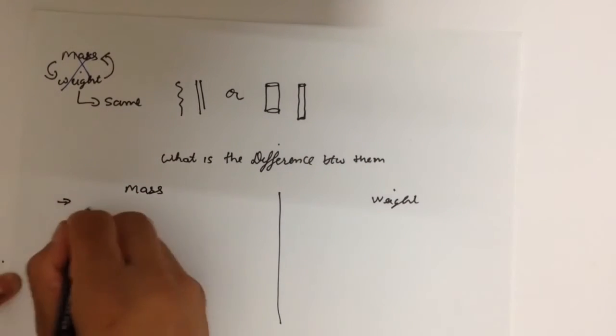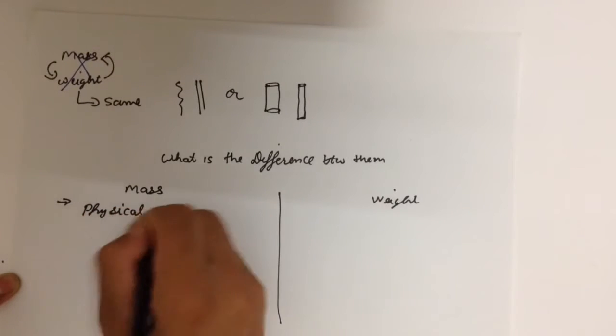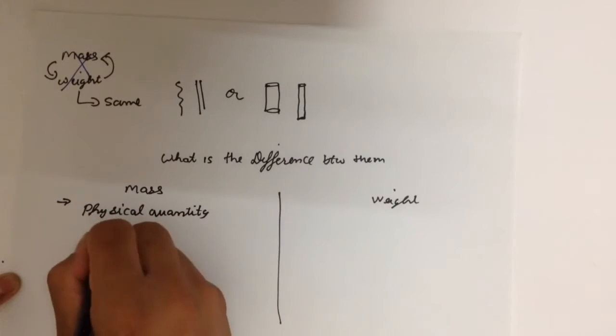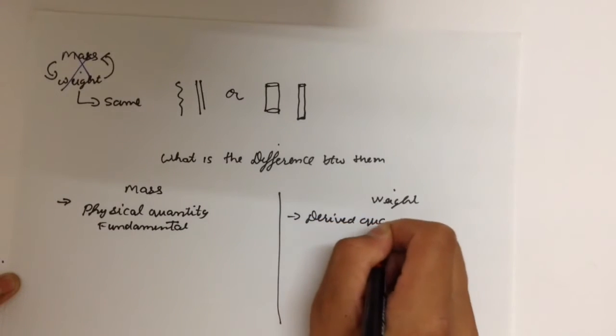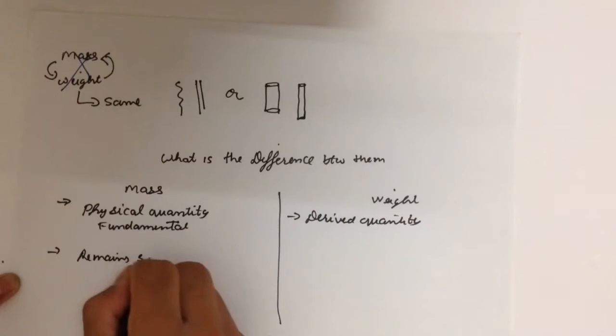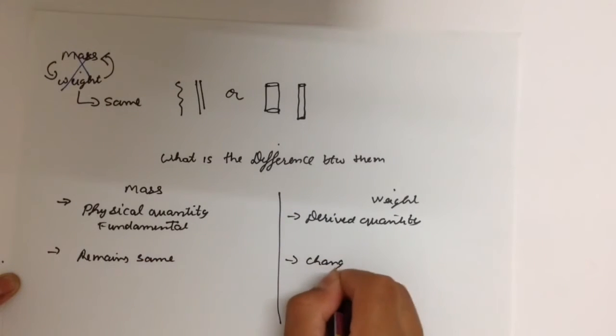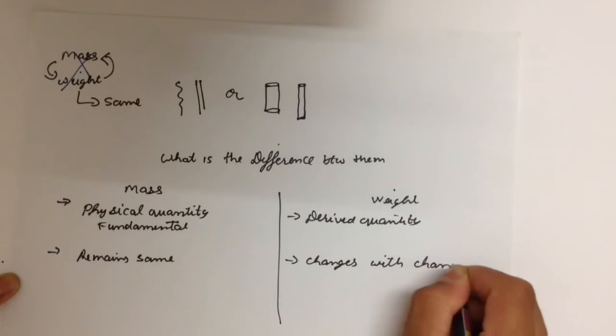The first and foremost difference is that mass is a base quantity. It's a fundamental physical quantity that is not derived from any other quantity. Whereas weight is a force and hence is a derived quantity. Mass remains same for a given object, unless you chop off your hand or cut off your leg.